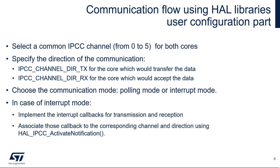After generating the basic skeleton of the application with IPCC using STM32CubeIDE or STM32CubeMX, we need to select the IPCC channel from 0 to 5 for both cores — it must be the same for both. Then specify the direction: IPCC_CHANNEL_DIR_TX for the transmitting core and RX for the receiving core. Next, select the communication mode — polling or interrupt. In interrupt mode, implement callbacks for transmission and reception, and associate the callback to the corresponding channel and direction using HAL_IPCC_ActivateNotification.